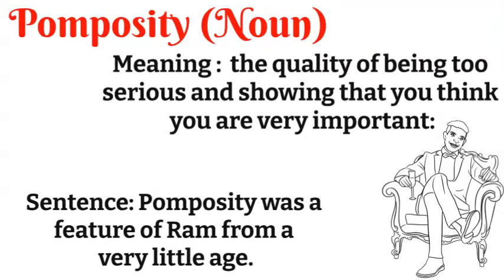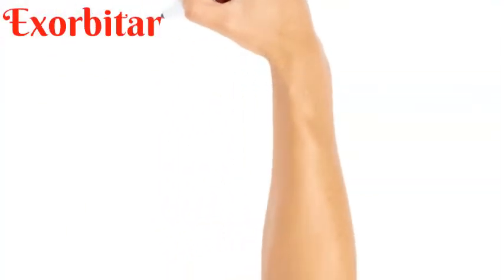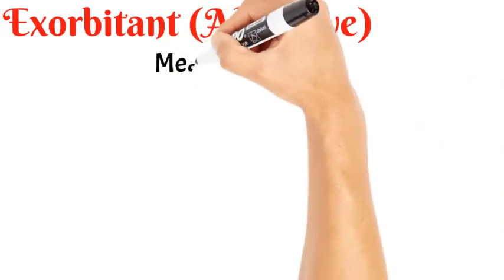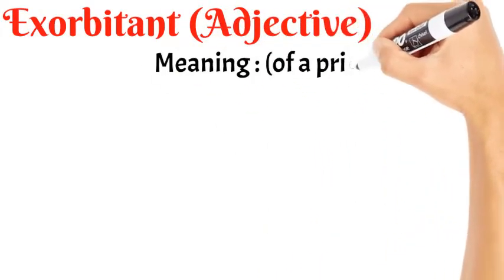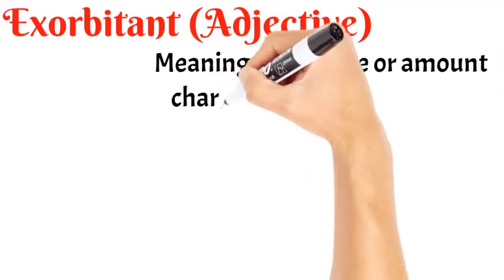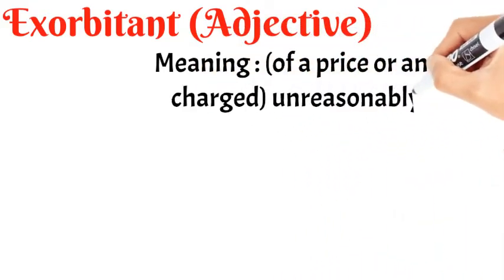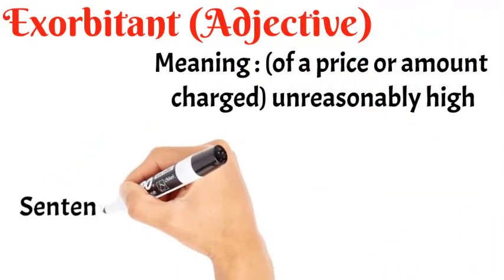Pomposity is basically self-importance. So I hope this word is also clear to everyone. Let's move on to the last word for today. The last word is exorbitant. Exorbitant is an adjective which means of a price or amount charged unreasonably high.